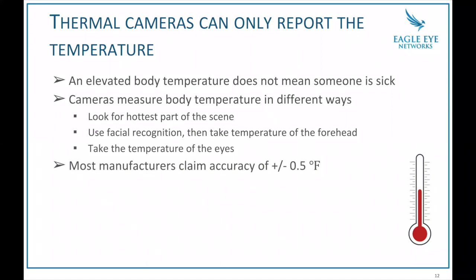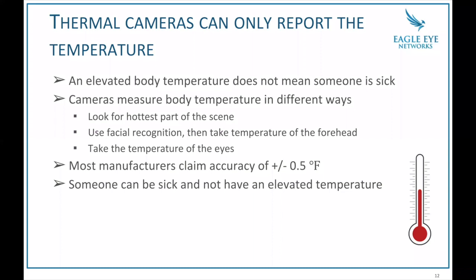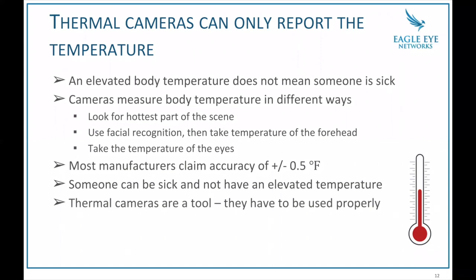Most camera manufacturers in this space claim an accuracy of half a degree Fahrenheit — about 0.2 degrees Celsius — which is much better accuracy than perimeter protection thermal cameras. But someone can also be sick and not have an elevated temperature. That's actually pretty common with COVID-19: you can be infected for up to a week and not exhibit symptoms, i.e., elevated temperature. So this detects temperature — it doesn't detect if somebody's sick. Thermal cameras are a tool and they have to be used properly: generally as an initial screening, and if somebody is elevated, there should be a secondary screening as well.